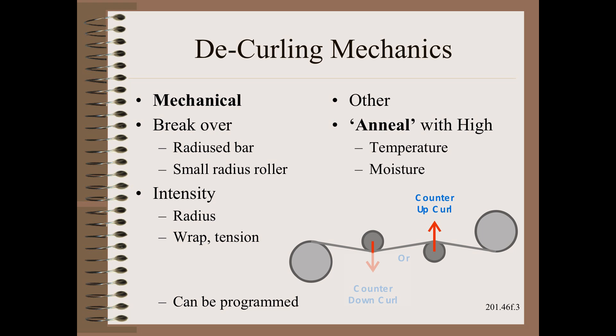You can also anneal some webs, such as metals and plastics, with heat. You can also anneal some webs, most notably paper, with moisture. In fact, a light steaming on one side is a very powerful tool to pull the paper web to that side.